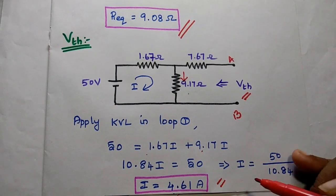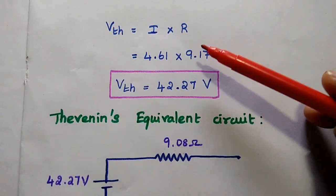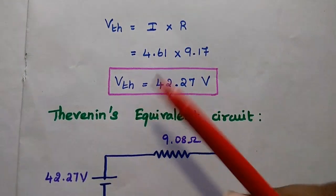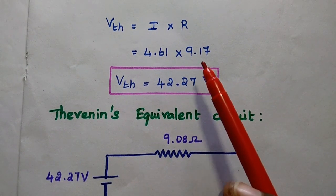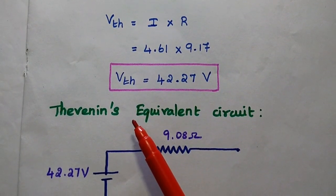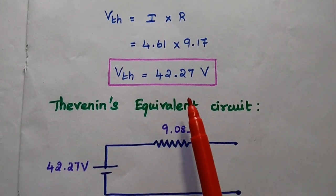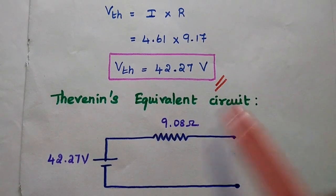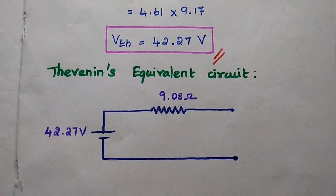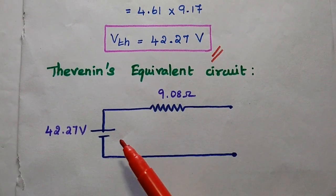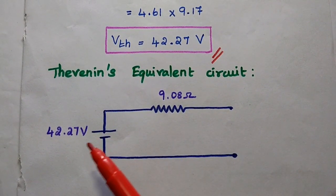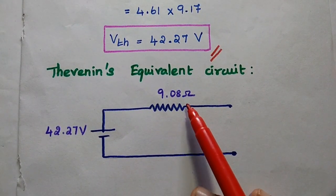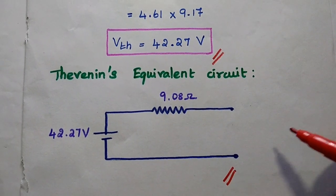In the next step, we multiply the current with the resistance between terminals A and B. Current is 4.61 A and the resistance value is 9.17 ohm, so the Thevenin's voltage is 42.27 V. Now we have calculated the Thevenin's resistance and Thevenin's voltage. The Thevenin's equivalent circuit for the given circuit has a voltage source of 42.27 V in series with the resistance of 9.08 ohm. This is the final answer.